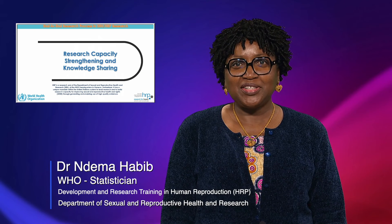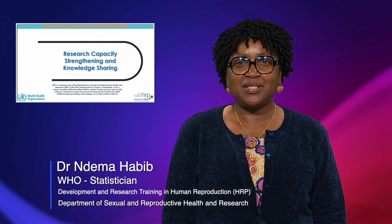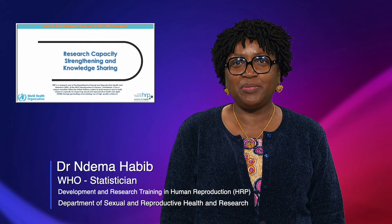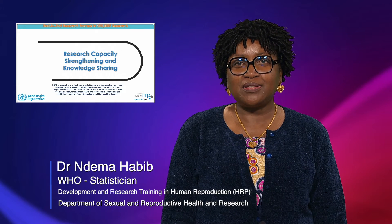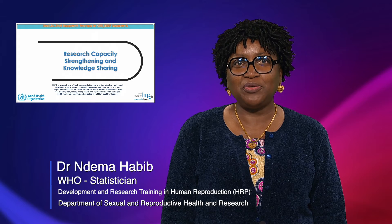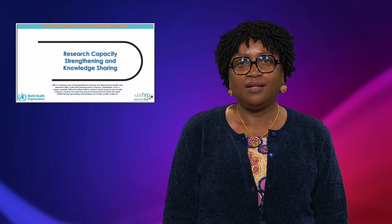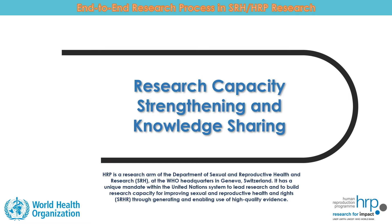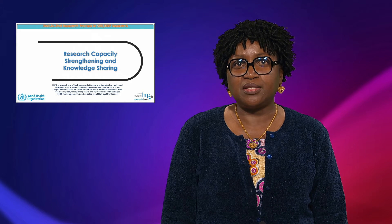Welcome to this introduction to the end-to-end research process used by HRP, the United Nations Special Research Program on Human Reproduction. In this video, you will learn about the nine stages of the research process used by HRP and WHO's Department of Sexual and Reproductive Health and Research, which also contributes to strengthening the research capacity and knowledge sharing with the HRP research collaborating institutions.